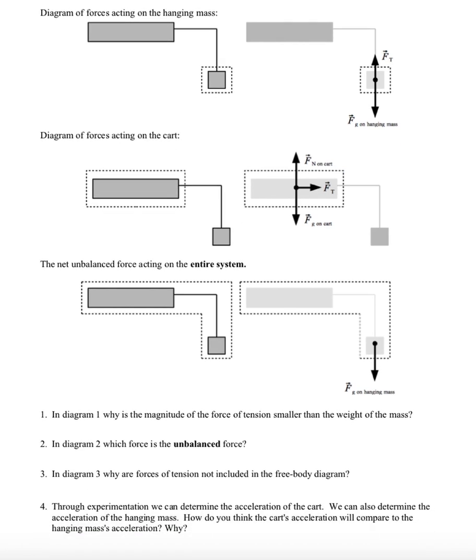Here are pictures of the results I found on the previous page. In diagram one, why is the magnitude of the force of tension smaller than the weight of the mass? It has to be because the hanging mass is accelerating, and there must be an unbalanced force in order for that to occur. In diagram two, which force is the unbalanced force? That would be the force of tension.